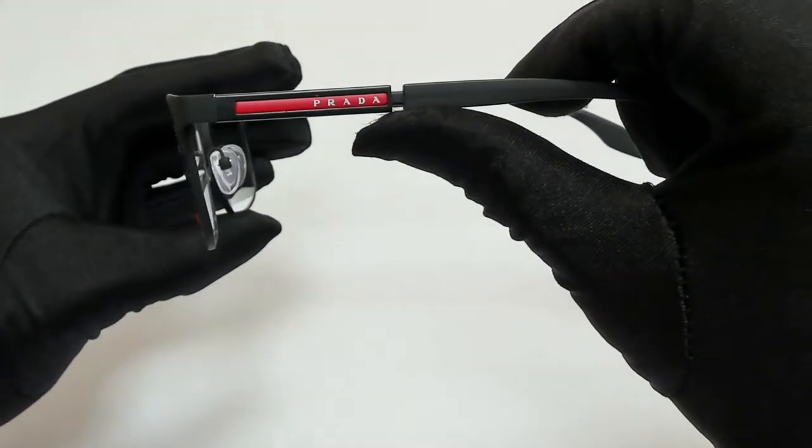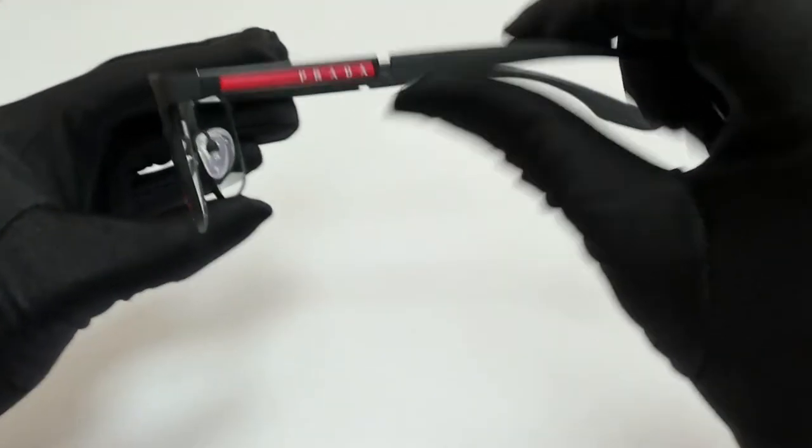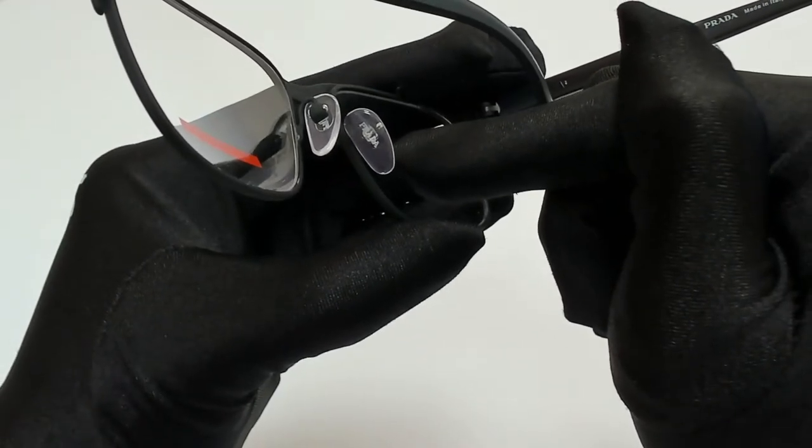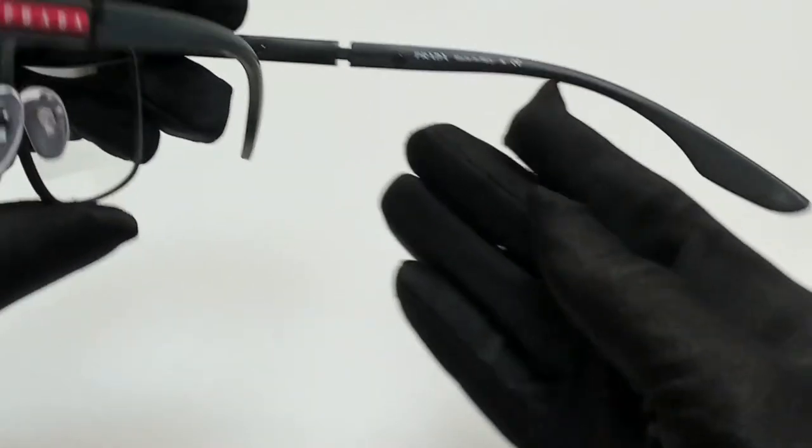On its temples, you'll find the Prada Linea Rossa line detail, and Prada can also be found on its nose pads. And it's made in Italy.